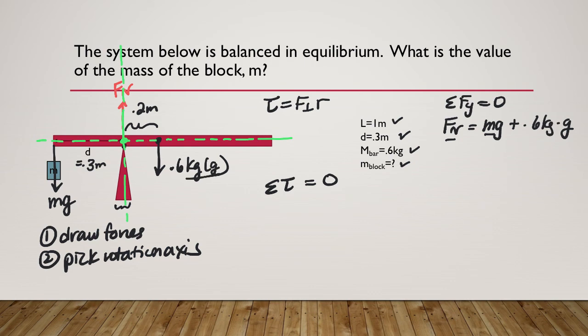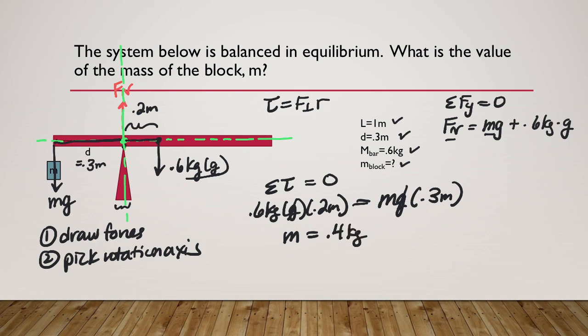So our torque here is going to be this force, the clockwise torque, 0.6 kilograms times g, times its distance from the rotation axis, which is 0.2 meters. That equals the counterclockwise torque, which is mg, times its distance from the rotation axis, 0.3 meters. The g's cancel out, and then we solve for m. 0.6 times 0.2 is 0.12 divided by 0.3 is 0.4 kilograms. That's the value of our unknown mass.